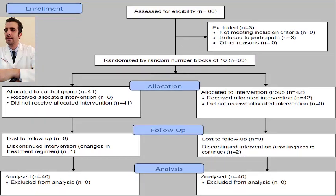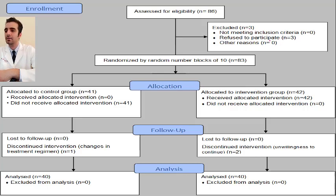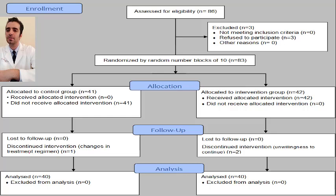At the end, 86 patients were selected, of whom 3 refused to participate. Two patients were excluded from the intervention group due to reluctance to continue, and one patient was excluded from the control group after the second day due to a change in treatment regimen. Finally, 80 patients including 49 men and 31 women completed the study, randomly assigned to control and intervention groups.